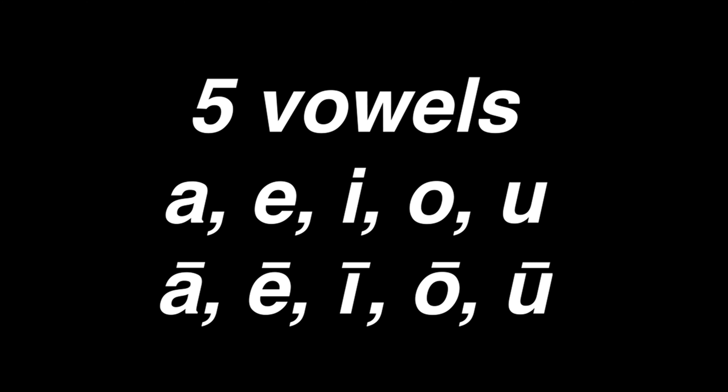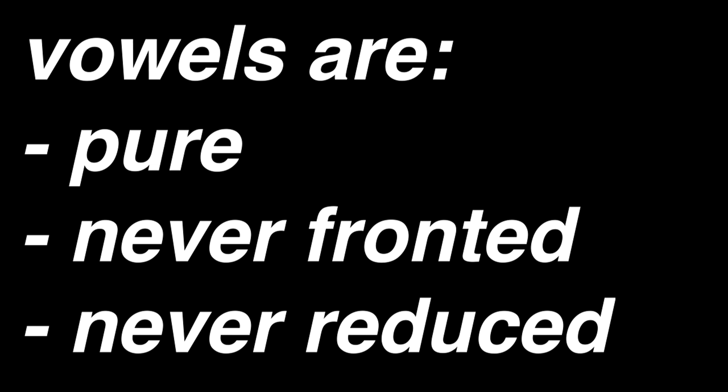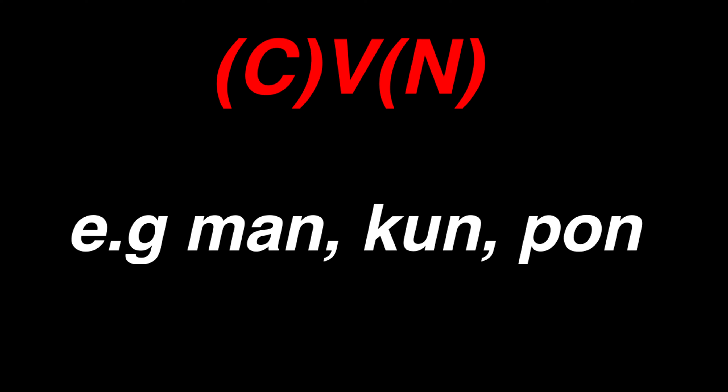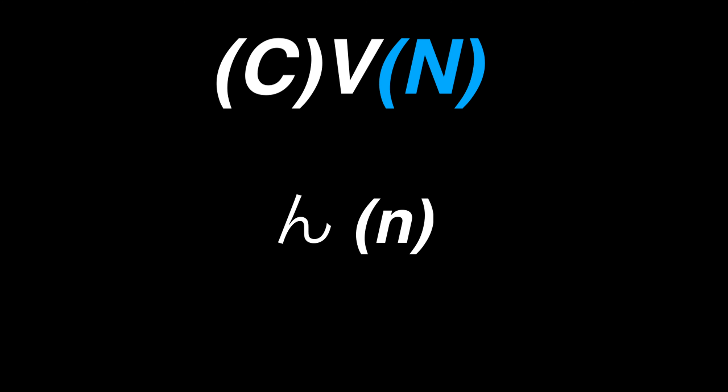Japanese phonology is quite simple to grasp. It has five vowels, and each vowel has a short and long variant. The vowels are all pure, meaning they can't be turned into diphthongs. The vowels are never fronted and are never reduced, like they sometimes are in English. Japanese has a syllable structure of CVN, meaning that a syllable is always either just a vowel, a consonant and a vowel, or a consonant, vowel, and a nasal. This nasal is always N, which in the kana syllabaries gets its own character.